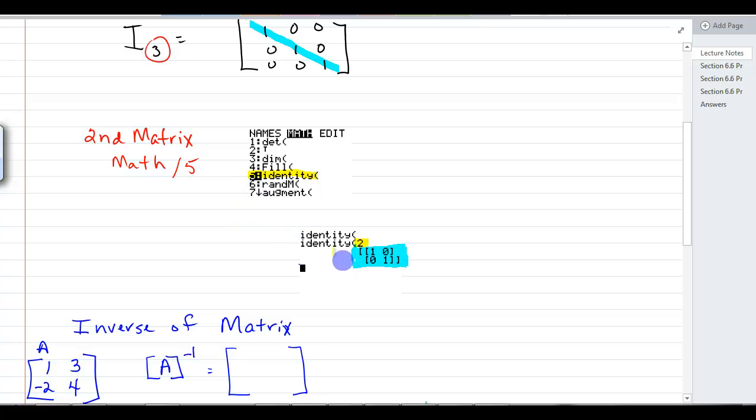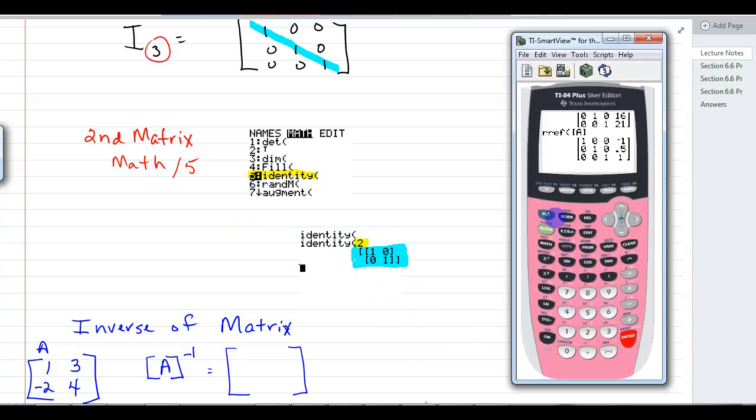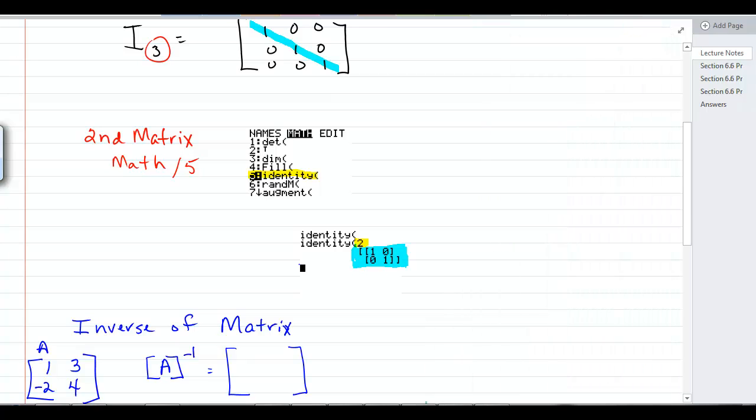So if we went in and we did that, let's clear everything. We went to second matrix, over to math, and number 5. And you've got identity, and if we wanted a 4, identity 4. Hit enter, and we would get 1, 0, 0, 0, 0, 1, 0. You can see there's this diagonal of 1s, everything else is 0. And that's called the identity matrix.